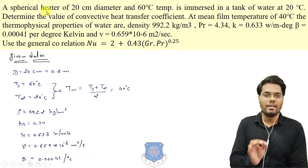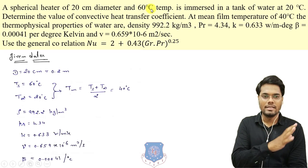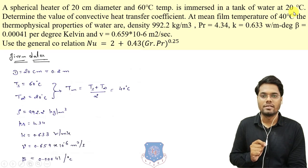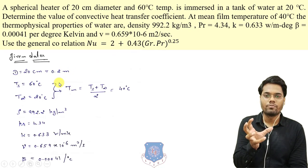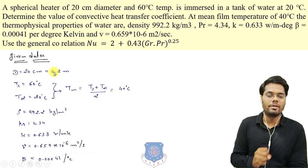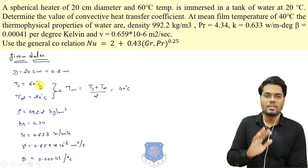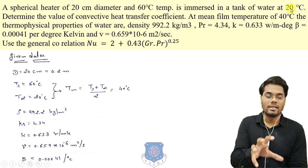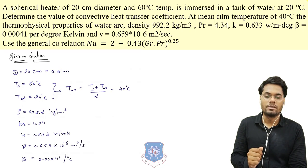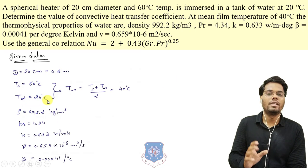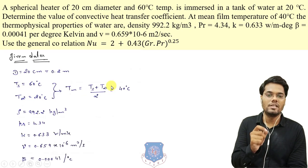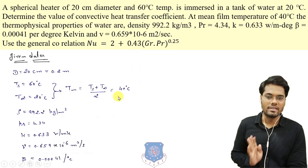A spherical heater of 20 centimeter diameter at 60 degree Celsius is immersed in a tank of water at 20 degree Celsius. So the diameter is 0.2 meter, surface temperature Ts is 60°C, and the surrounding water temperature T∞ is 20°C. From Ts and T∞ we can calculate the mean film temperature as (Ts + T∞)/2 = 40 degree Celsius.